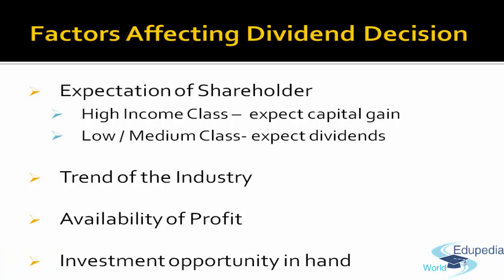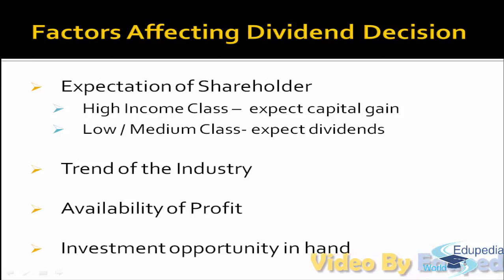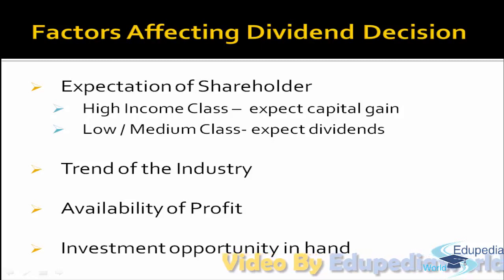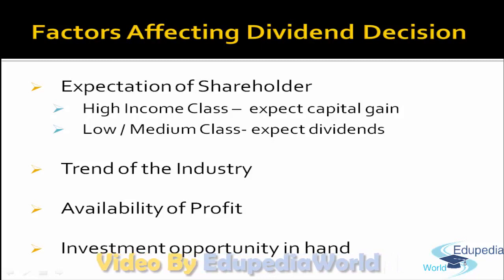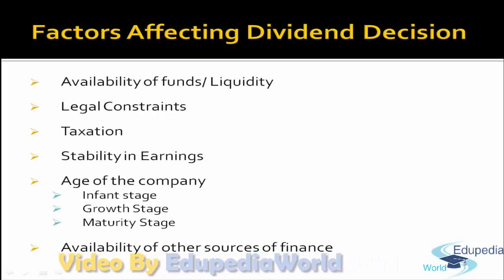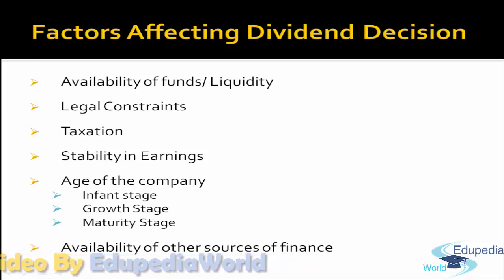Another factor is availability of profit. Obviously this is very important because you pay your dividend out of profit. If profit is available in ample, the company distributes dividend; otherwise it does not. Next is investment opportunity in hand — a very important point — because if the company has a good investment opportunity, they can justify retaining its surplus to the shareholders. Other factors include availability of funds or liquidity in the business; only then can you distribute dividend.